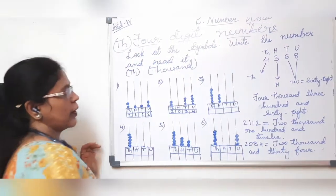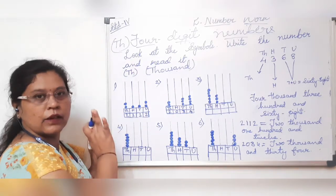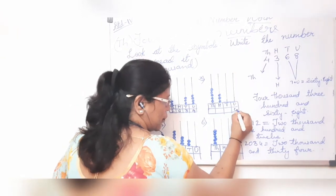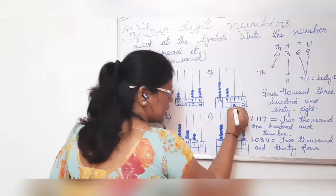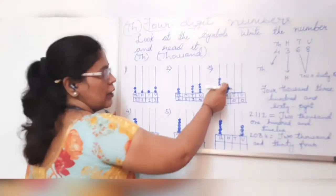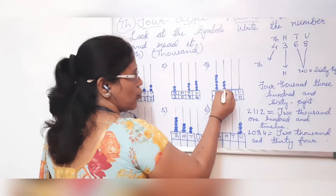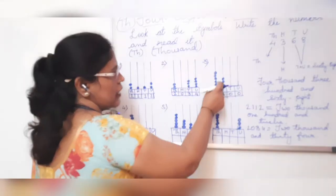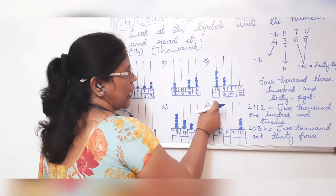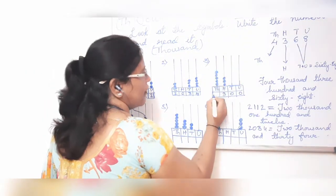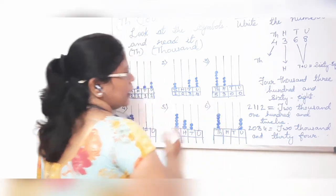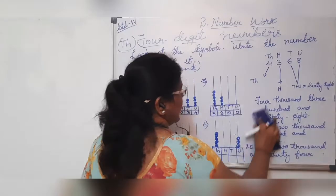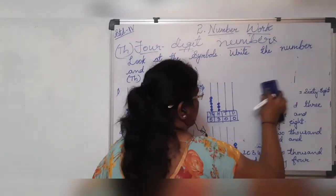Now the third one. Units place — no number, so put 0. Tens place — no number, so put 0. Hundreds place — how many beads are there? 1, 2, 3 — three beads, so hundreds value is 3. Thousands place — 1, 2, 3, 4, 5 — five beads. So the number is 5,300. How will you read this number? It is five thousand three hundred.